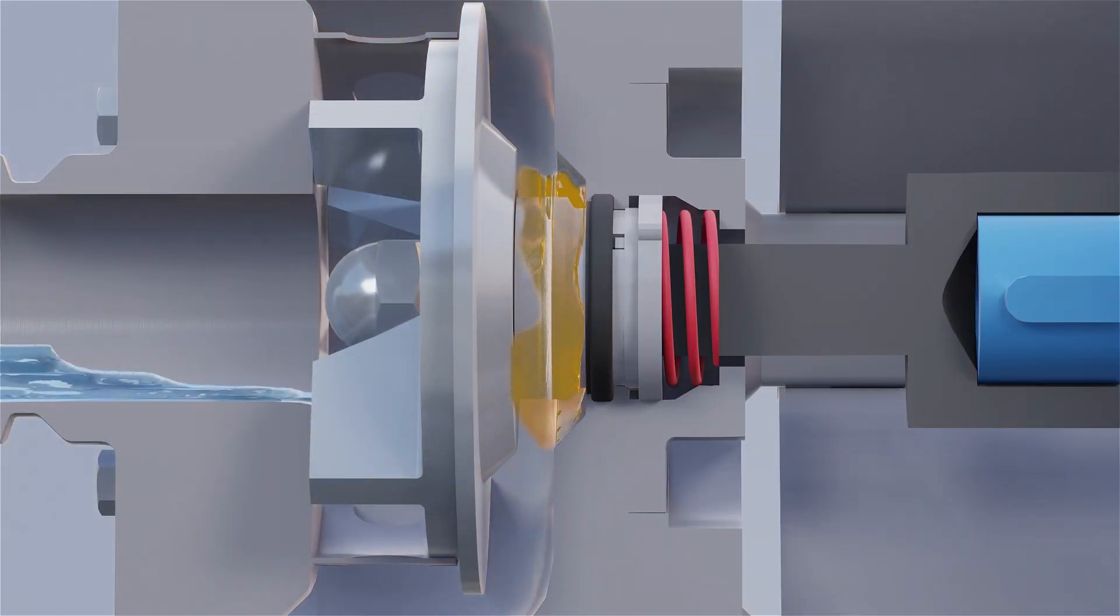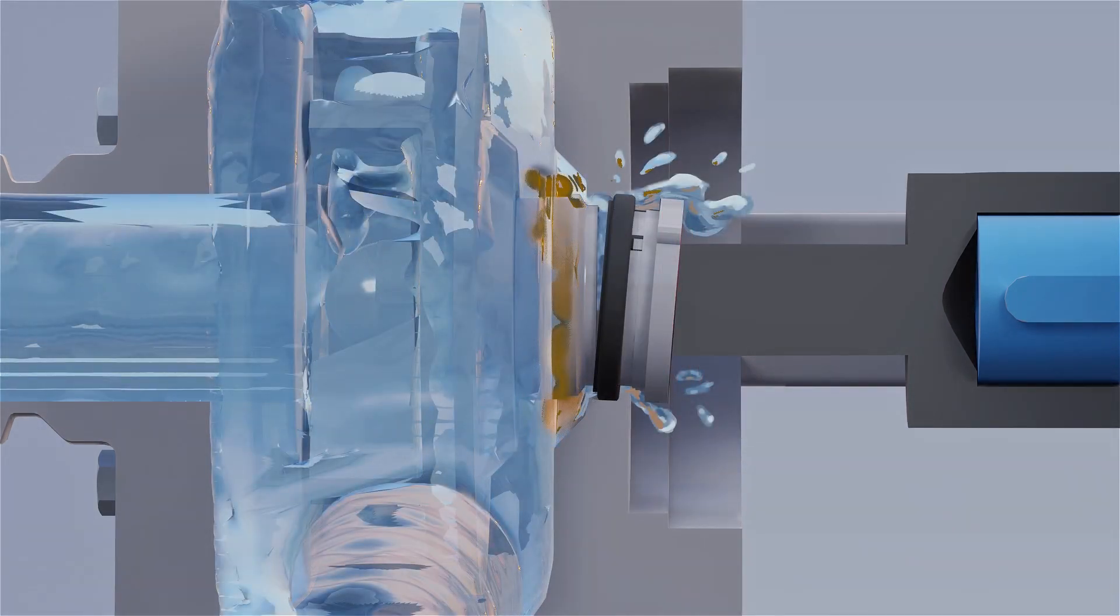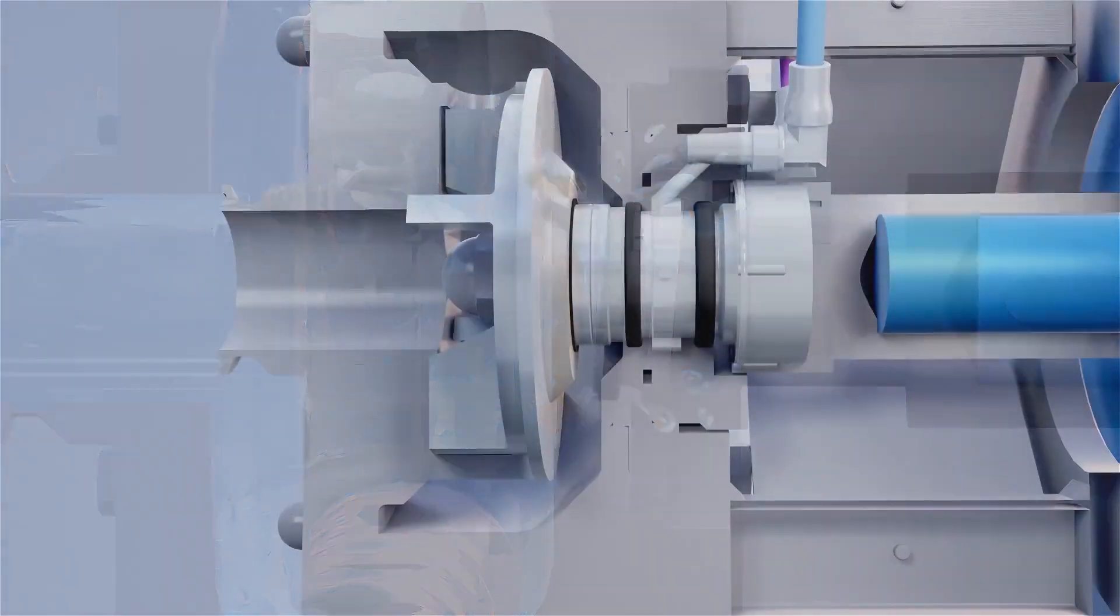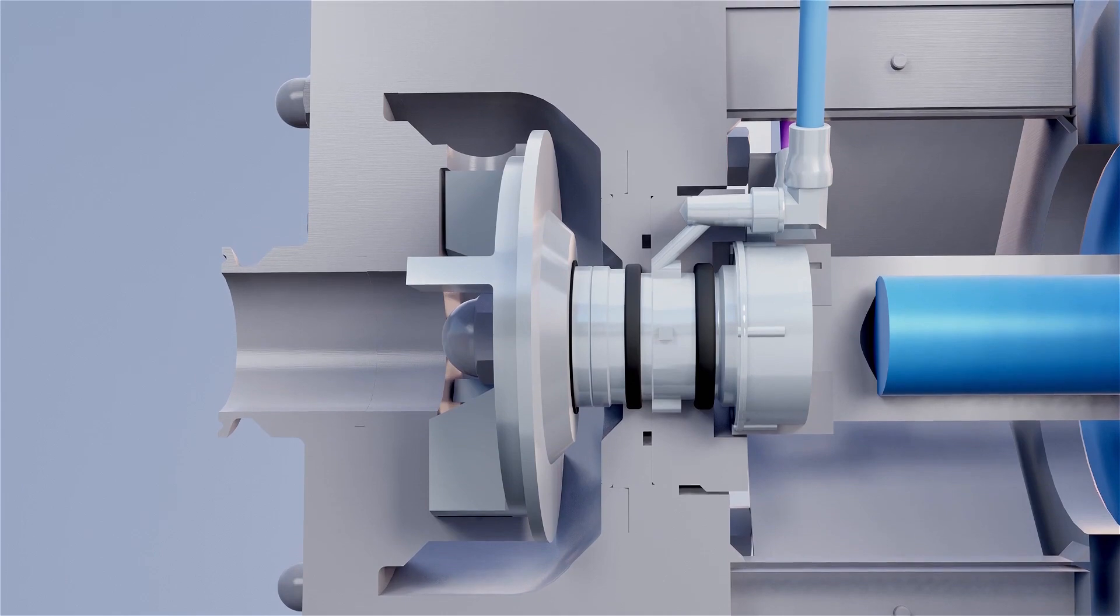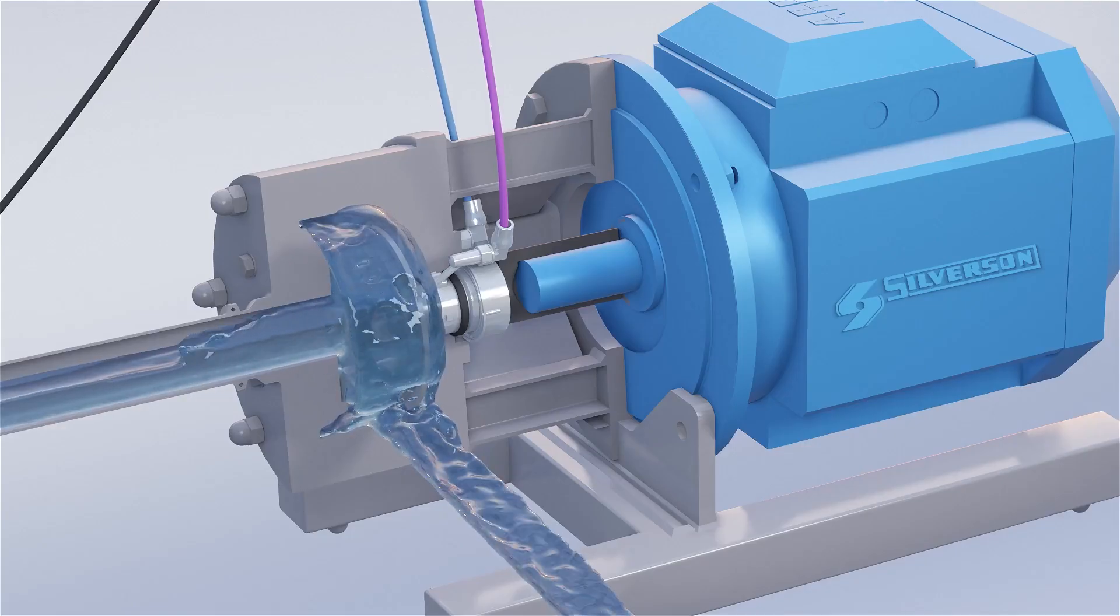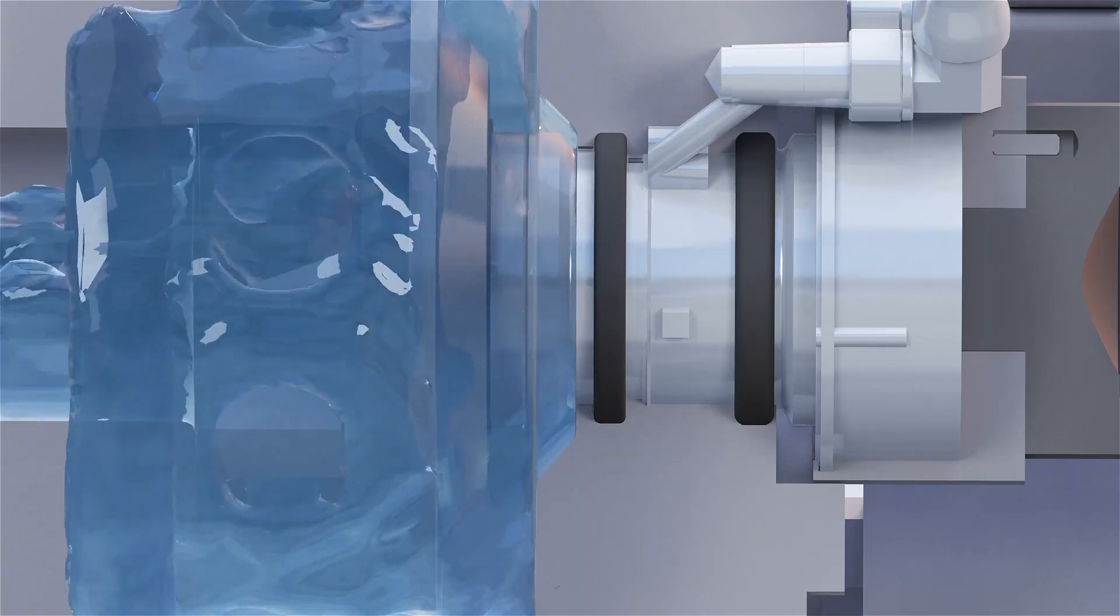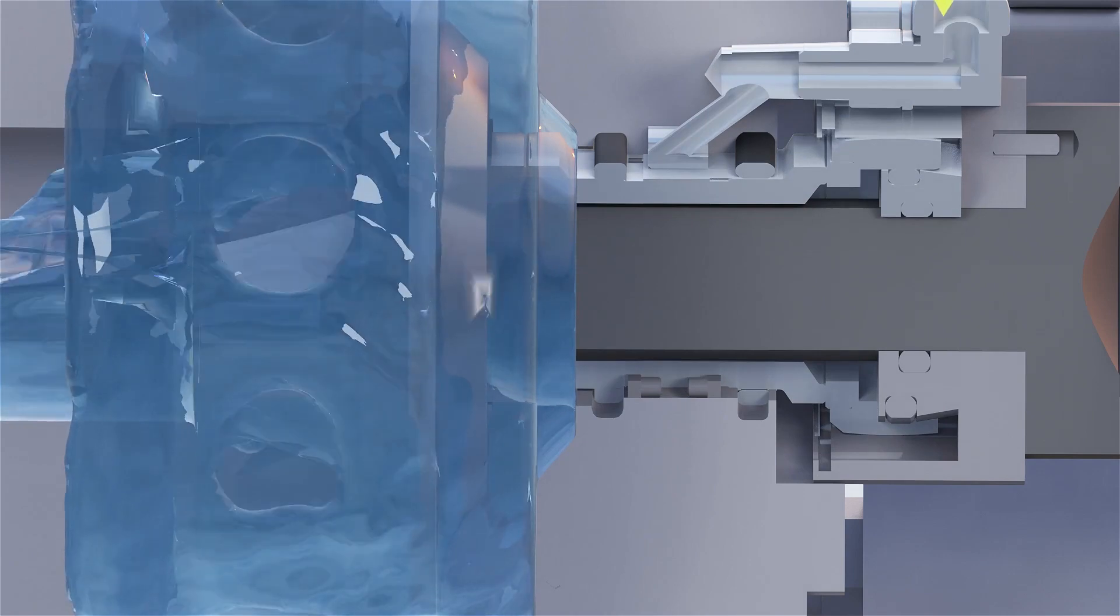A double mechanical shaft seal overcomes this. A sealant fluid is used to flush a chamber between the two seals at a higher pressure than the product that is being mixed, so only the sealant fluid crosses the seal faces.